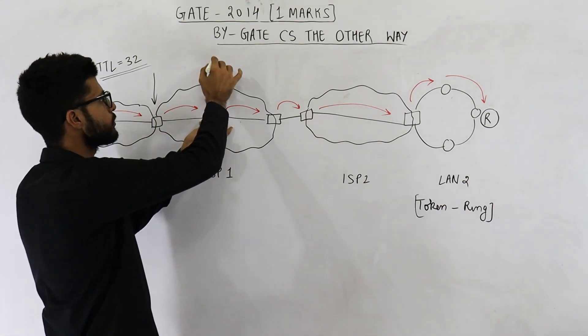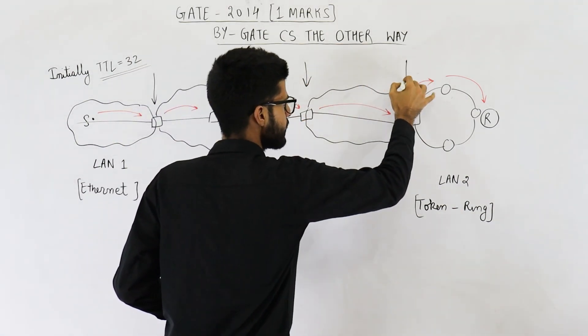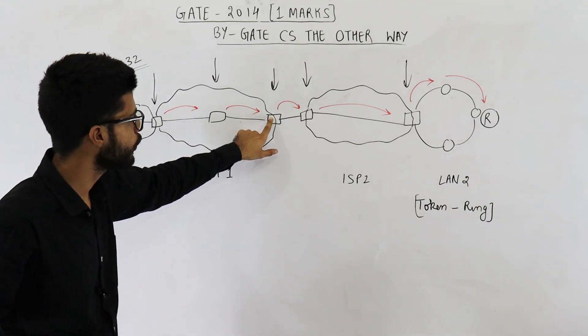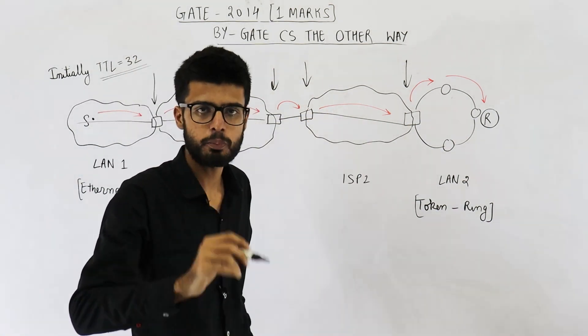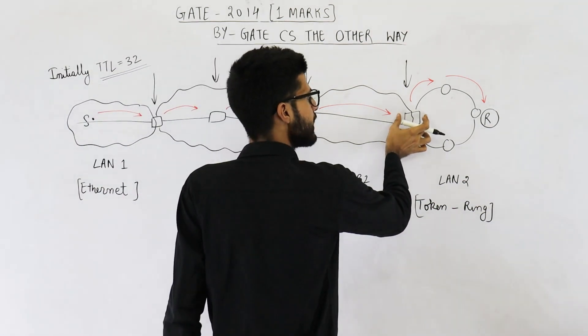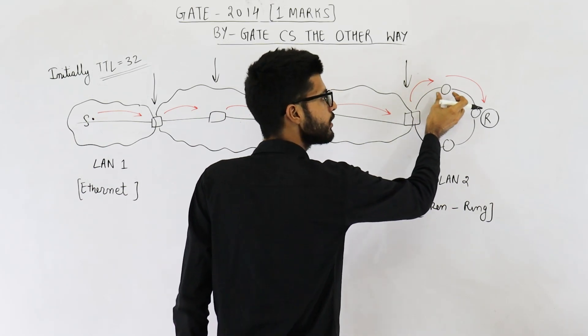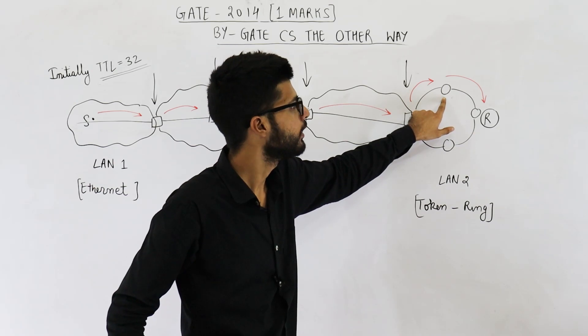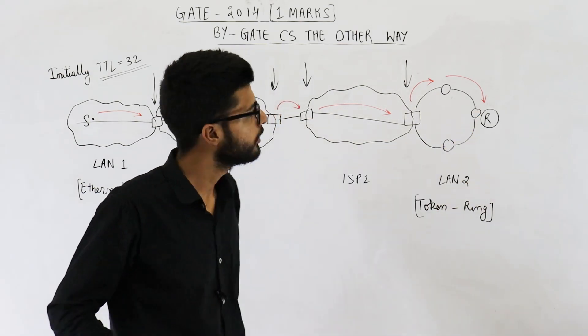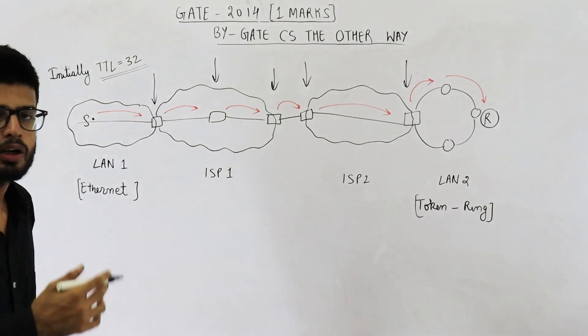Similarly, this router will also decrement the value of TTL. Parallelly, this router and this router and this one, all of these routers will decrement the value of TTL. And moreover, packet can be sent from here to here or from here to here in one hop only because all of these links are point to point links. Now, this router has decremented the value of TTL and it will forward the packet to this node. This is not a router. So, this node, moreover, it is present inside a LAN. Inside a LAN, you won't decrement the value of TTL. It will directly give the packet to receiver R. Now, receiver has got the packet.